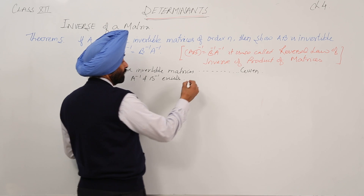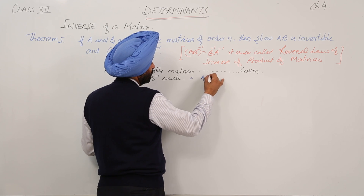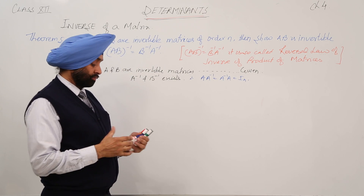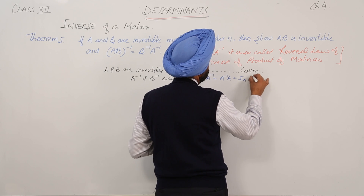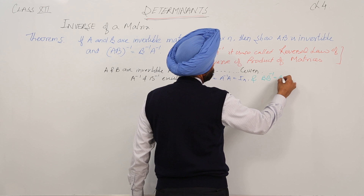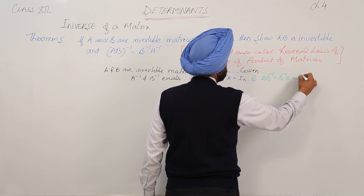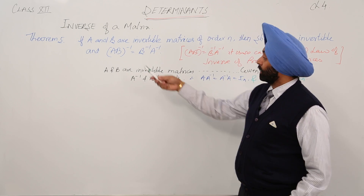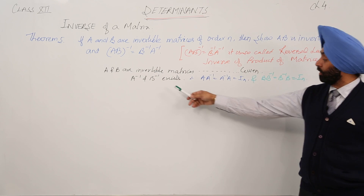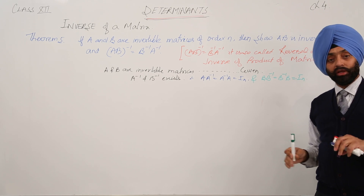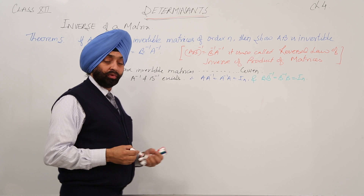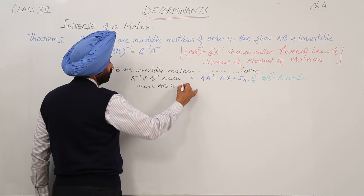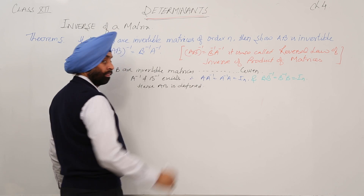Therefore, we can write A with A inverse is equal to A inverse with A is equal to identity matrix. And we can write B with B inverse is equal to B inverse B is equal to identity matrix. Hence, AB is defined.